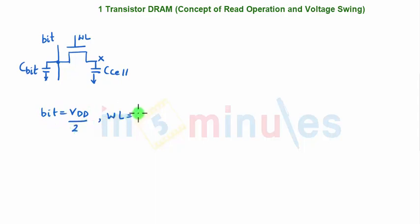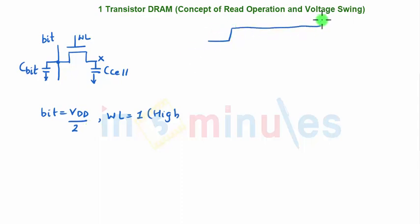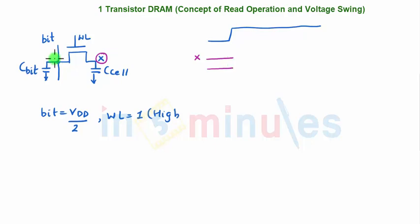Make the bit line equal to VDD/2, then make the word line high. Once this happens, let's look at a waveform: the word line has gone high. Let's presume something is present at node X — X could be high or X could be low. Our bit line is at VDD/2, so let's draw that as well — this is VDD/2 — with X high and X low levels shown.